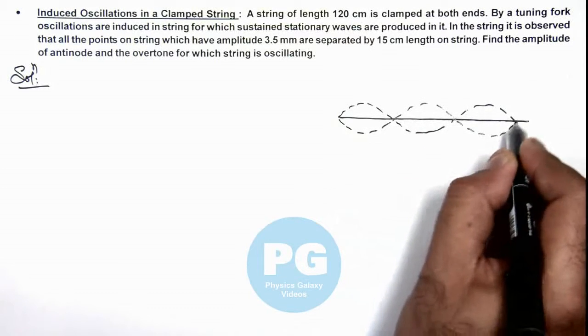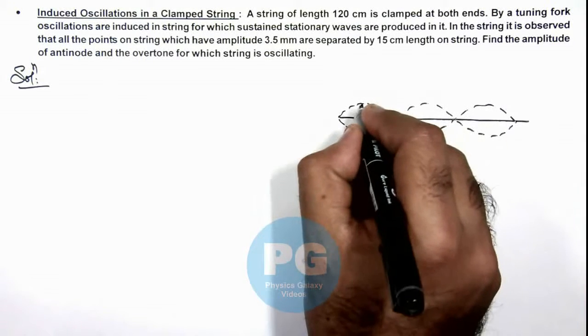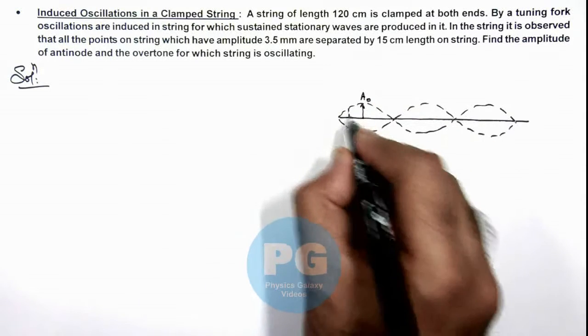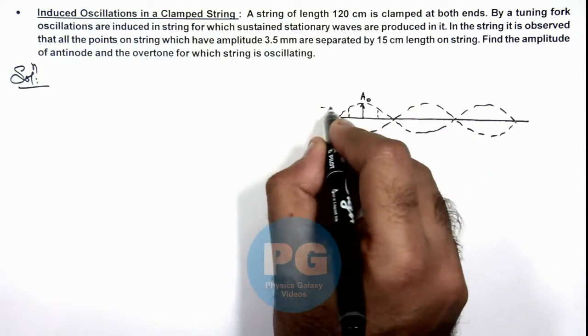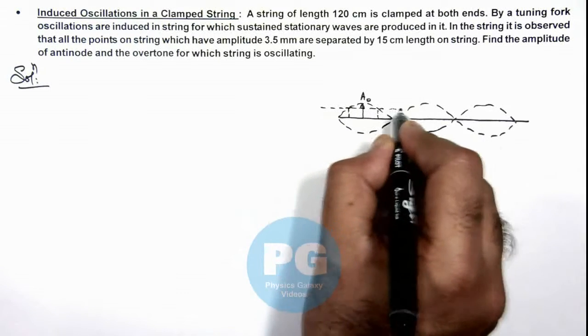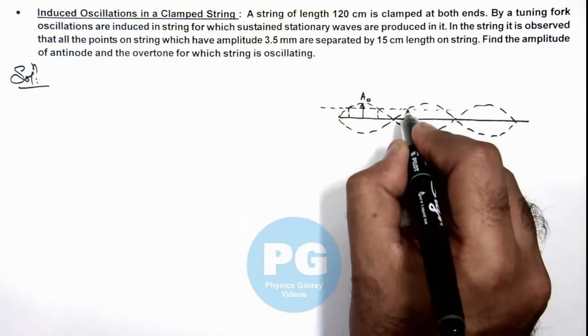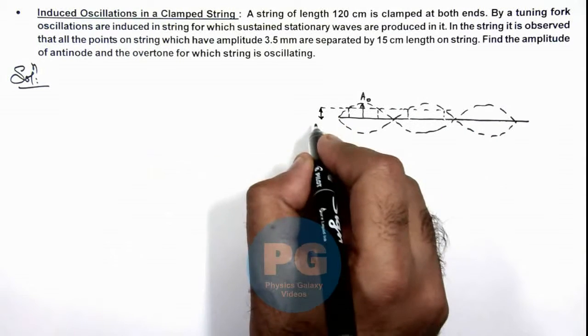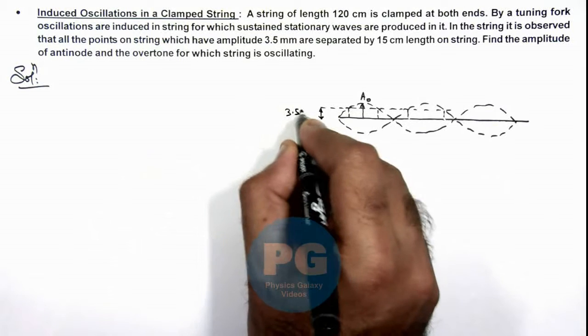Then here we can see if the antinode amplitude is taken to be A₀, and on both sides of this antinode amplitude there are points in the string which are of equal amplitude, and this is given as 3.5 mm.